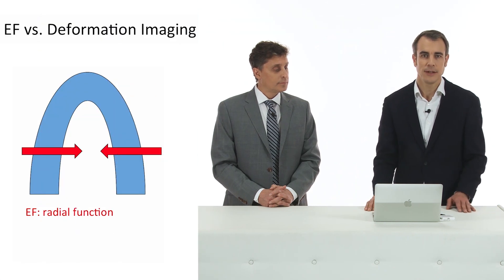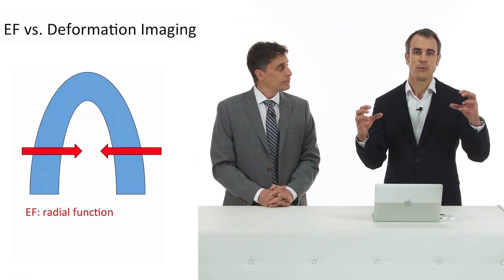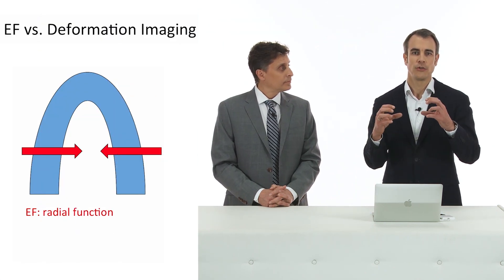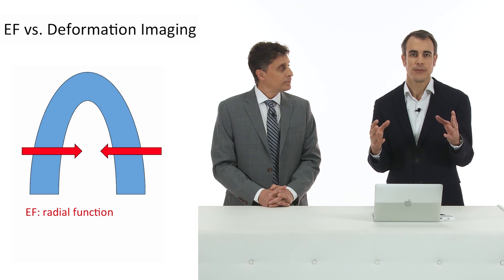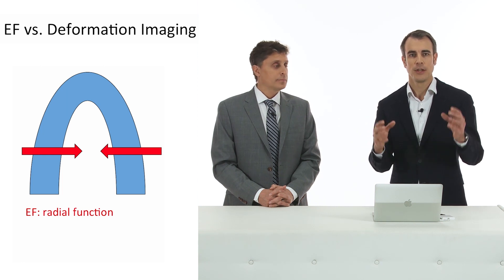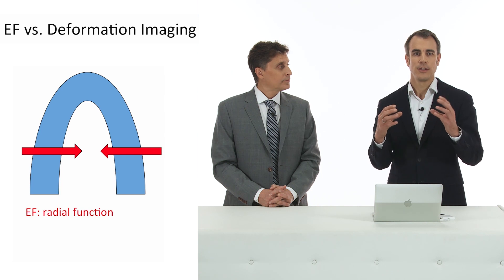When we compare ejection fraction, which is the standard method for analyzing left ventricular function, and deformation imaging, we can differentiate because ejection fraction is mainly a function of the radial contraction. And that's what we can see when we look at a four-chamber view, for example — we see radial function and radial contraction.